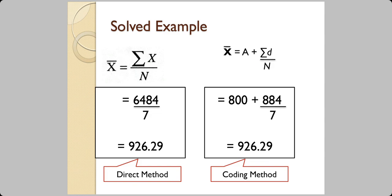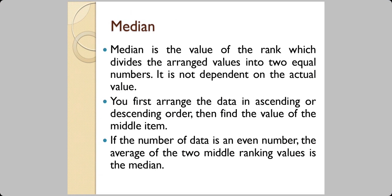On the left-hand side is the direct method and on the right-hand side is the assumed value (coding) method. In the first case, 6484 divided by 7 gives 926.29. In the second case, the assumed value was 800, the summation of differences is 884, and divided by 7 you still get the same value, 926.29. By either method the mean is the same.